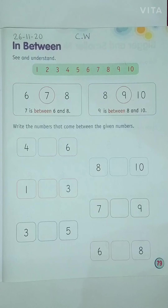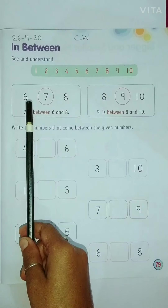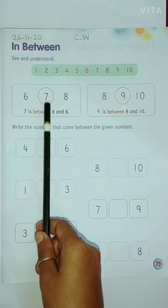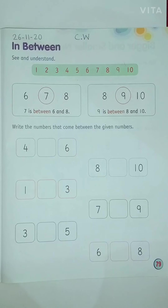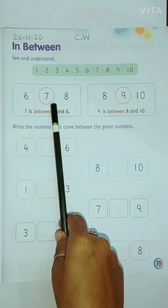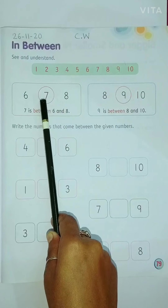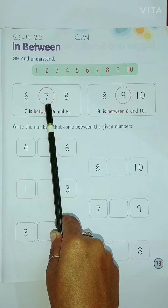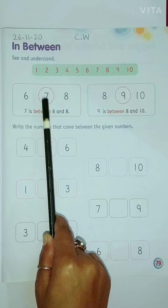In between means the middle one. Now, children, you can see there are some numbers written over here: 6, 7, 8. Tell me which is the middle number? 7. Because 7 comes after 6 and before 8. So, 7 is our between number, or you can say it is a middle number.